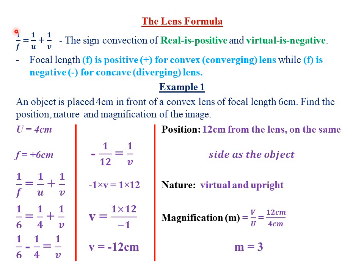Today we are looking at the lens formula, which states that the reciprocal of focal length is equal to the sum of the reciprocal of object distance and the image distance. That is: 1/f, where f is the focal length of the lens being used, is equal to 1/u, where u is the object distance measured from the lens, plus 1/v, where v is the image distance measured from the lens.